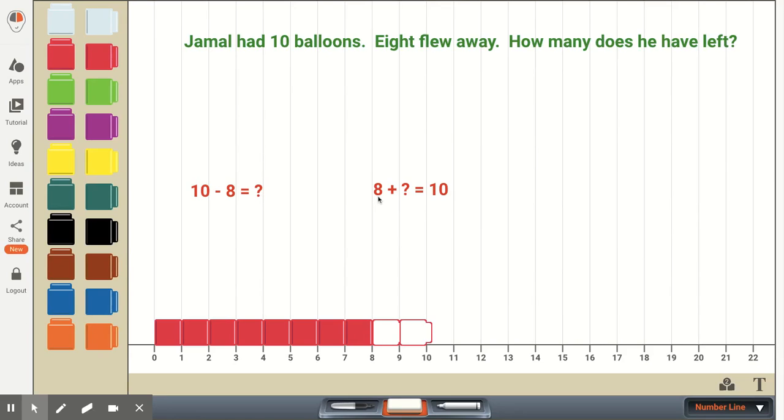Because 8 is one of the parts. 8 flew away. The other part is what we don't know, so it's 8 plus some number of balloons will be equal to our whole or equal to our total. And the student can do this.